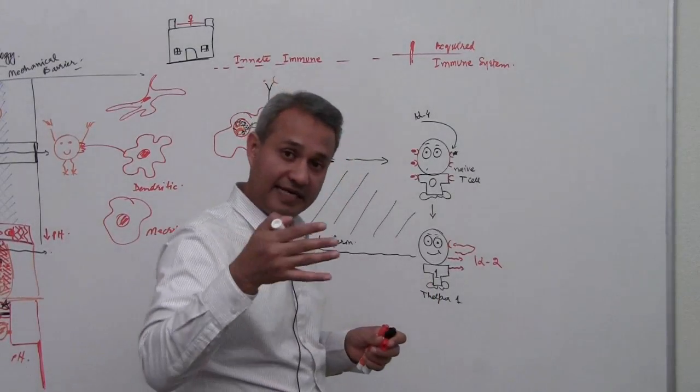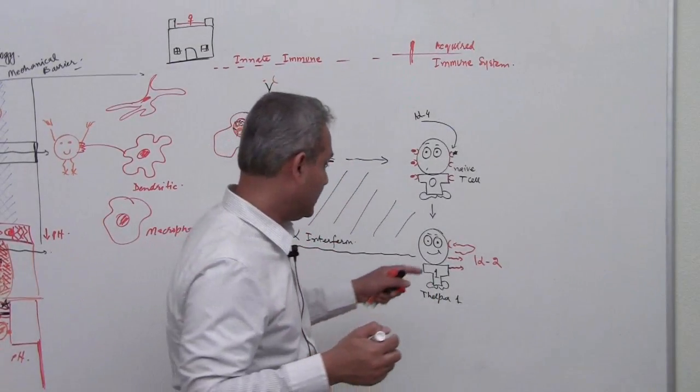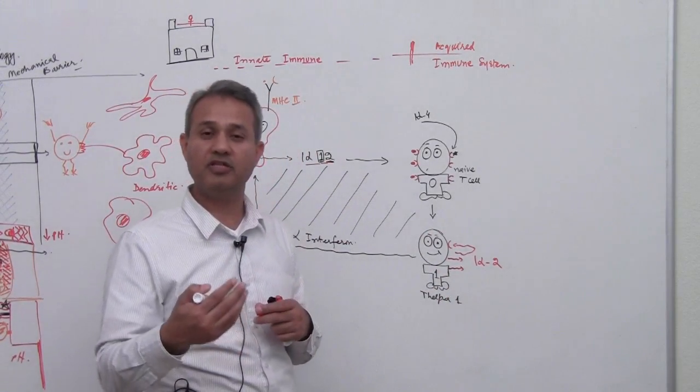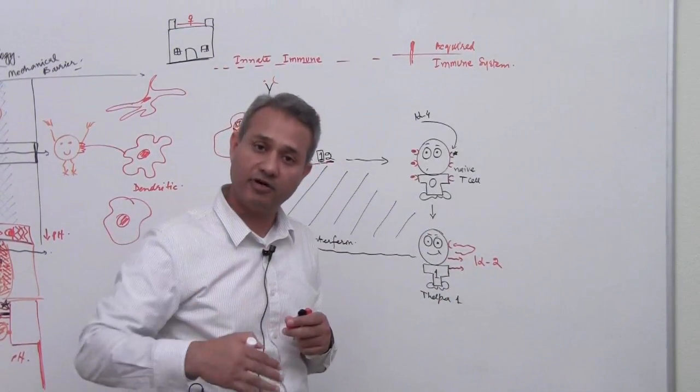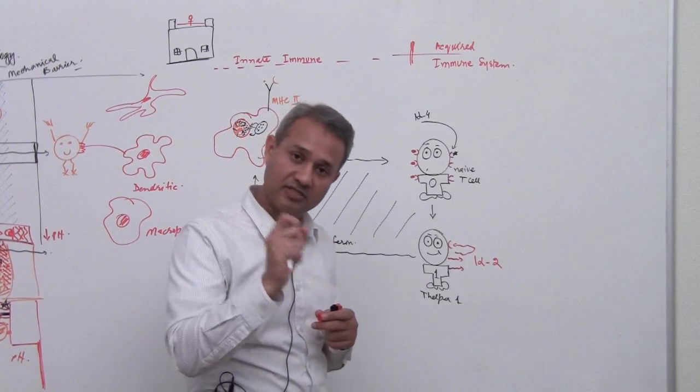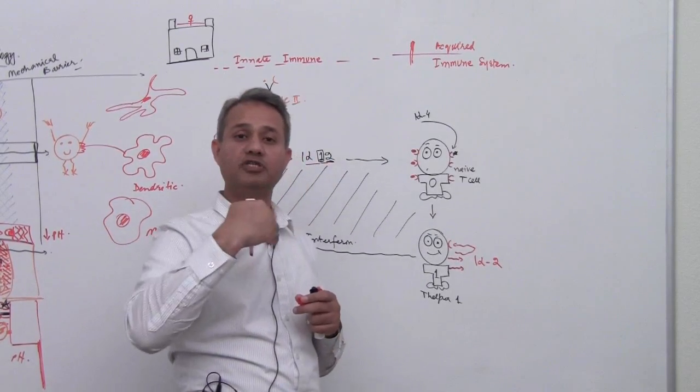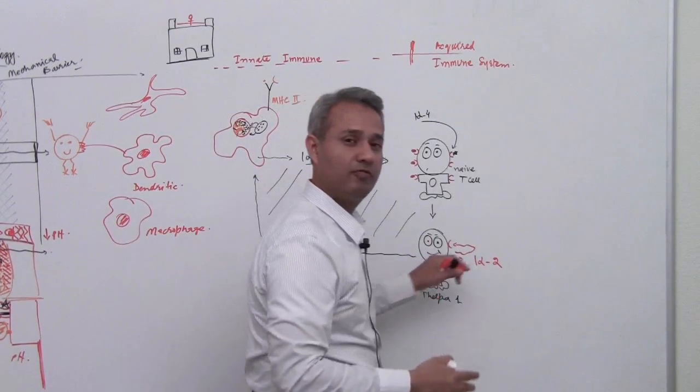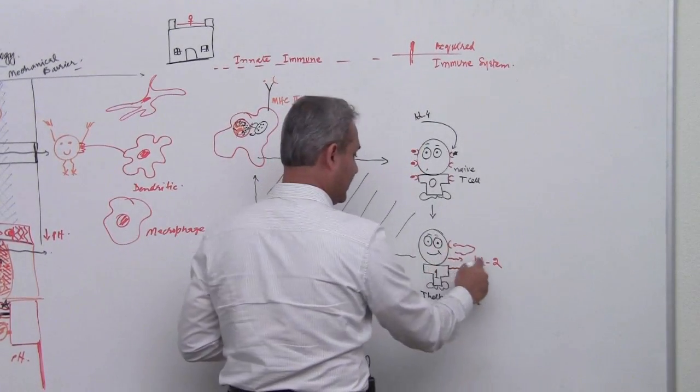The cell which secretes the IL-2, that cell itself responds to the IL-2 too. In a way this is an autocrine function where the chemical substance is secreted by a cell which is then acted upon by the same chemical substance. We will talk more about what happens, but IL-2 would do this.